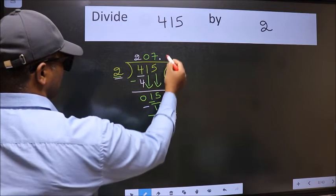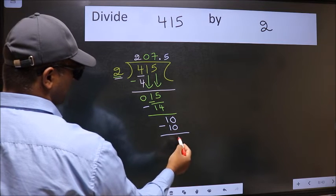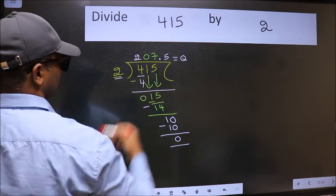When do we get 10 in the 2 table? 2 times 5 is 10. Now we should subtract. We get 0. So this is our quotient.